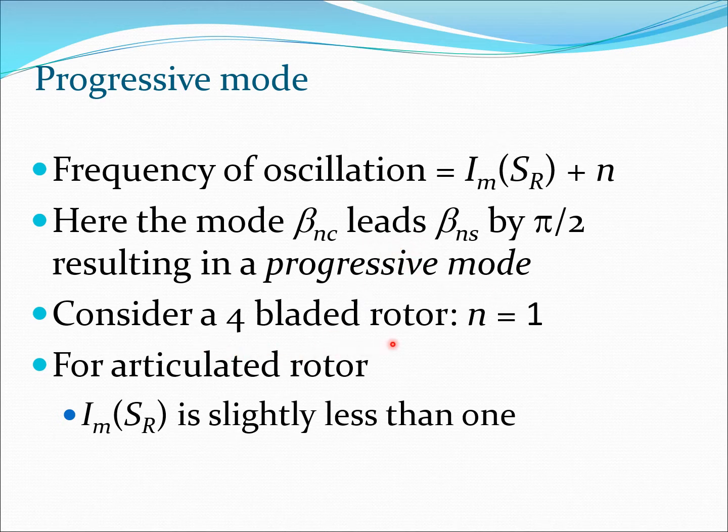Now let's consider a four-bladed rotor. We know for a four-blade N equals 1, and let's take an articulated rotor. This plays an important role whether the rotor has articulated or hingeless type because it will determine what is the value of this imaginary part. For such a rotor the imaginary SR is going to be slightly less than 1. In fact, we calculated previously a value like 0.87. So you are going to get 0.87 plus 1 and that is the frequency of the progressive mode. That's a high frequency progressive mode.